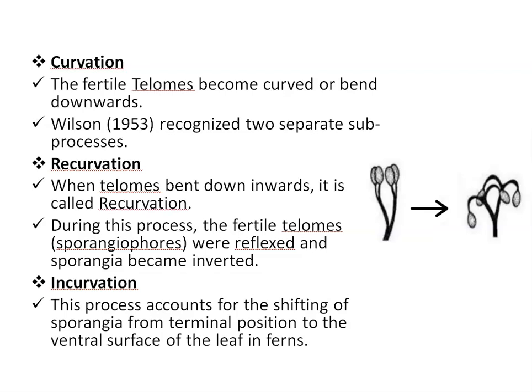The fifth process is curvation. In curvation, the fertile telomes become curved or bent downward. Wilson, in 1953, recognized two separate sub-processes: recurvation and incurvation. In recurvation, telomes bend downward and inward; during this process the fertile lobes were reflexed and the sporangia became inverted. In incurvation, this process accounts for the shifting of sporangia from the terminal position to the ventral surface of the leaf in ferns.